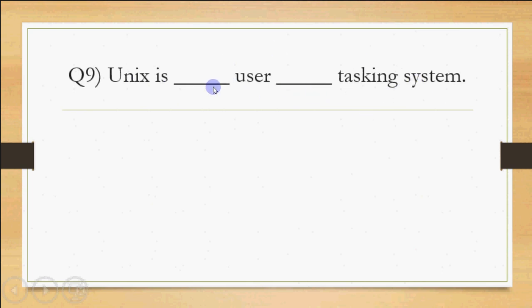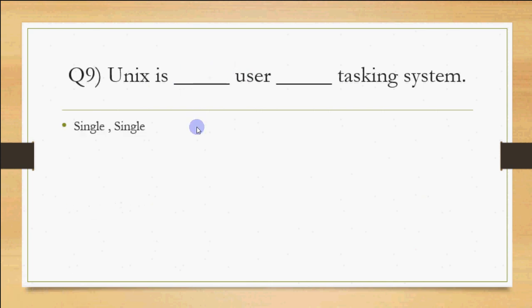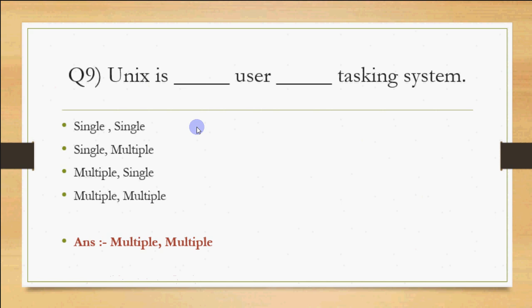Next question: UNIX is a blank-user blank-tasking system. Single-tasking means one task runs fully before another; multi-tasking means a major task is divided into smaller parts that execute concurrently. UNIX supports multiple users and multiple tasks simultaneously, so the answer is: UNIX is a multi-user, multi-tasking system.